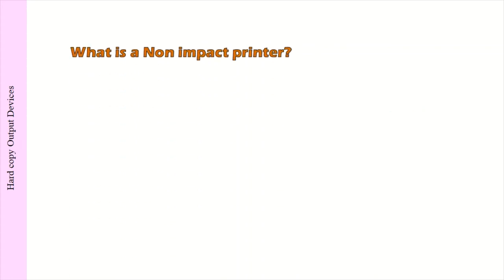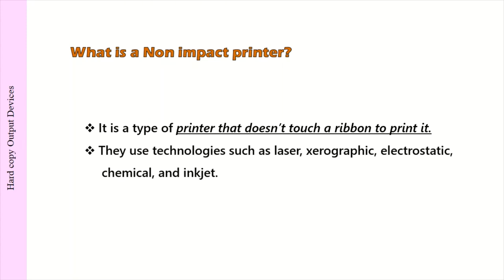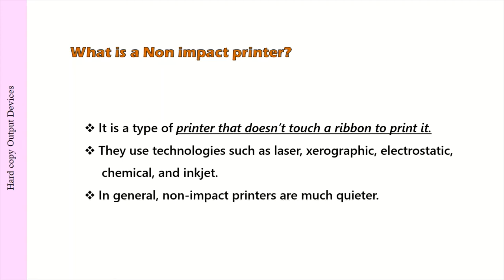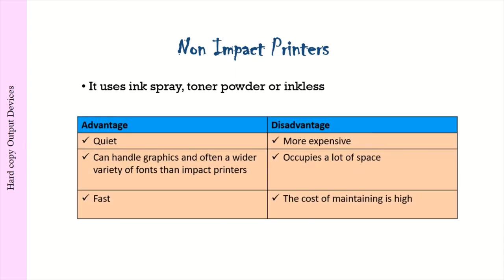What is a non-impact printer? It is a type of printer that doesn't touch a ribbon to print. They use technologies such as laser, xerographic, electrostatic, chemical, and inkjet. In general, non-impact printers are much quieter. They use ink spray, toner powder, or inkless methods. Advantages: quiet, can handle graphics and often a wider variety of fonts than impact printers, and fast. Disadvantages: more expensive, occupies a lot of space, and the cost of maintaining is high.